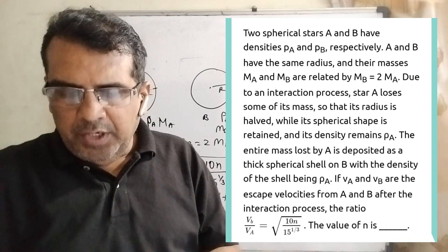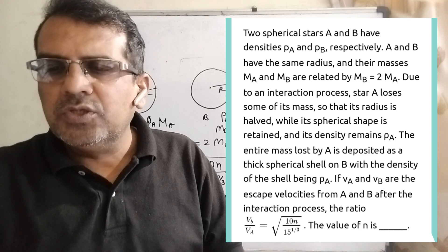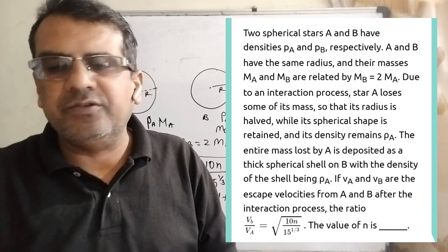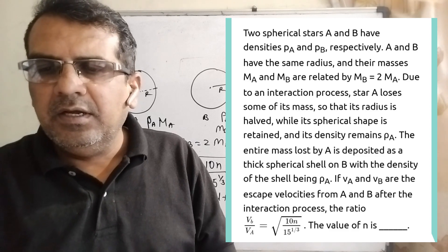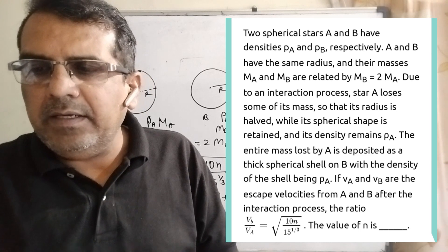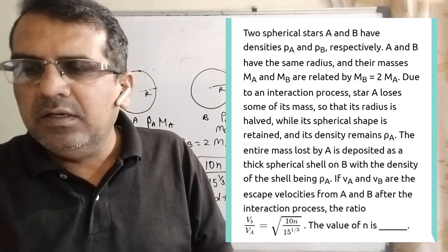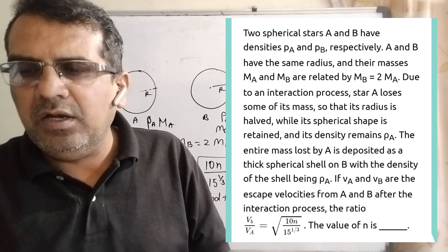Due to an interaction process, star A loses some of its mass so that its radius is halved, while its spherical shape is retained and its density remains ρA. The entire mass lost by A is deposited as a thick spherical shell on B.